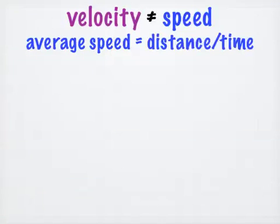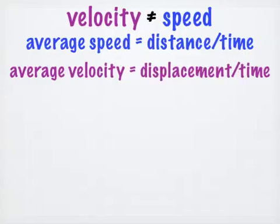The average speed of an object is equal to the distance an object travels over a given time interval. The average velocity of an object, on the other hand, is its displacement divided by a given time interval.